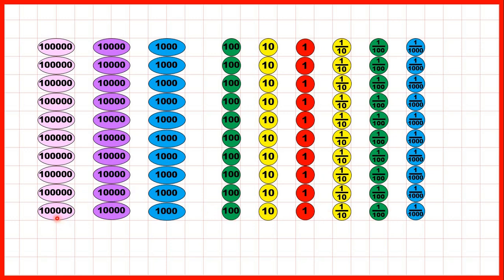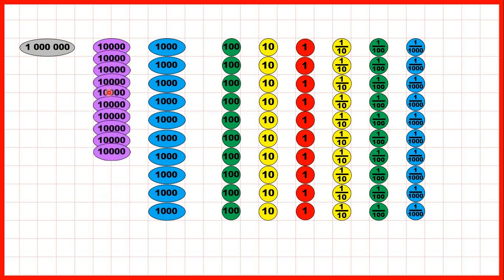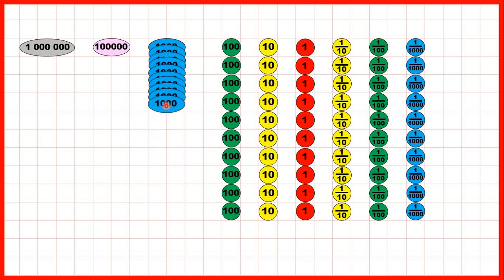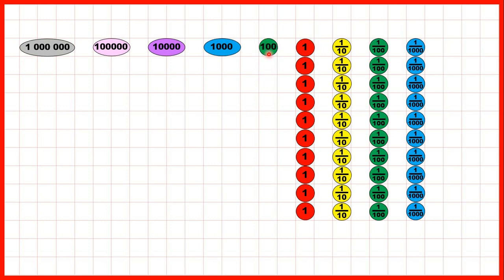We can exchange the other way as well. If we've got 10 hundred thousands counters, we can exchange those for one million counter. If we have 10 ten thousands, we can exchange those for one hundred thousand. Ten thousands can be exchanged for one ten thousand. Ten hundreds can be exchanged for one thousand. Ten tens can be exchanged for one hundred.